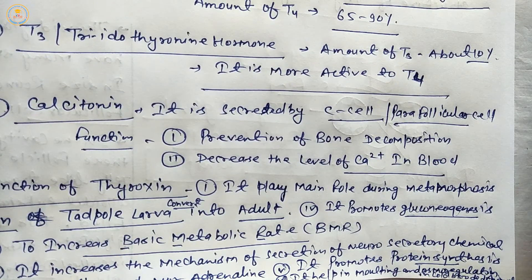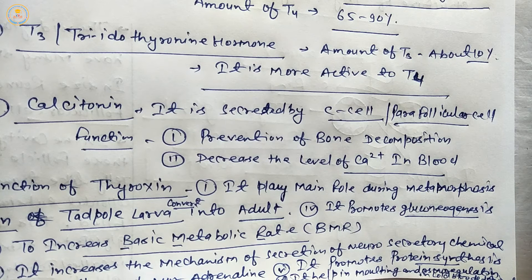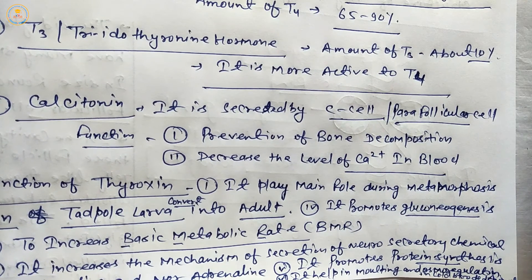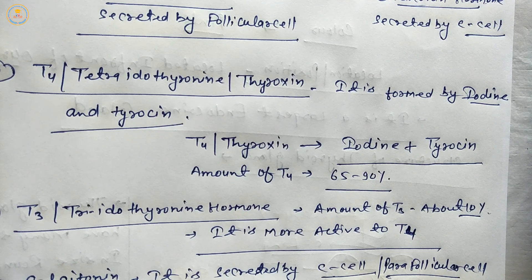To summarize the main functions of thyroxine: first, main role during metamorphosis; second, to increase basal metabolic rate; third, to promote protein synthesis and gluconeogenesis; fourth, to increase the mechanism of adrenaline and noradrenaline, which are neurotransmitters and hormones of the adrenal gland. Today's topic is now completed. Thanks, and have a nice day.